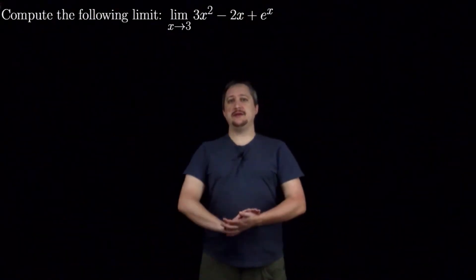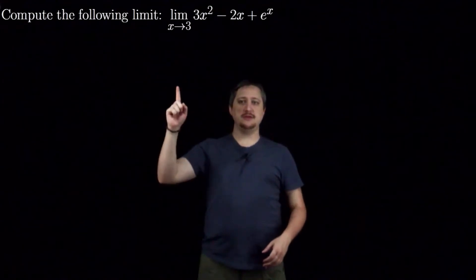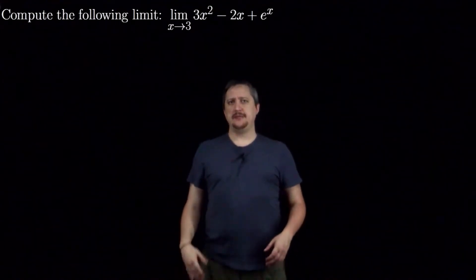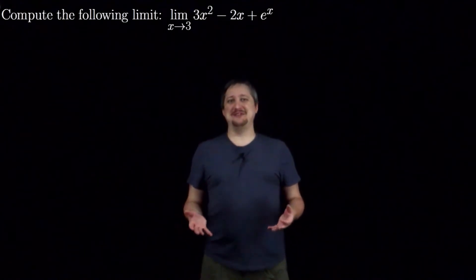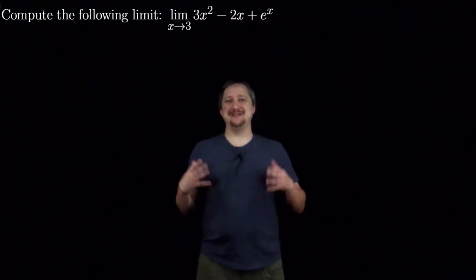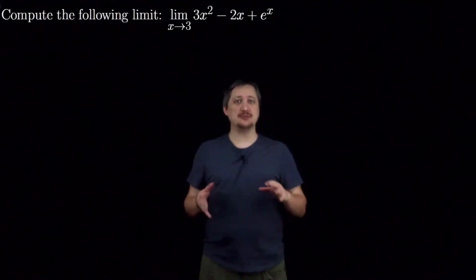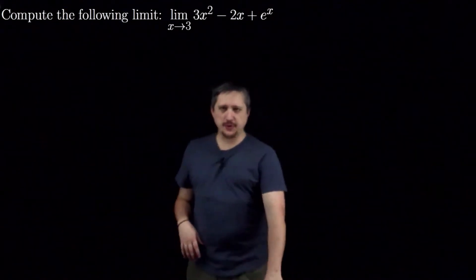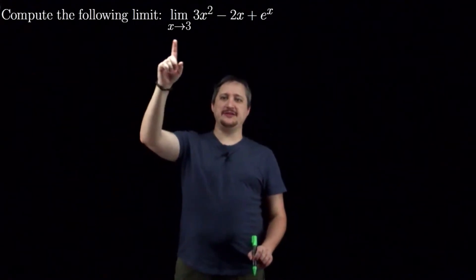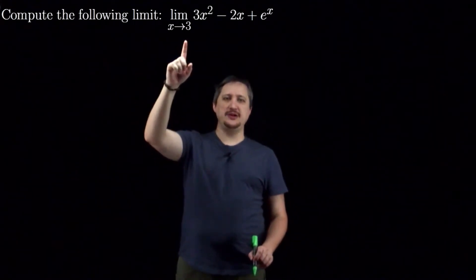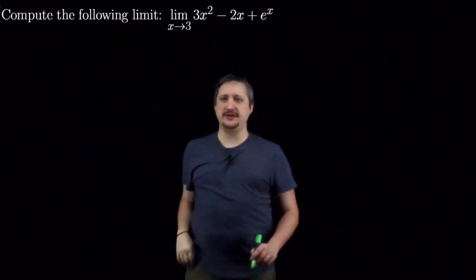Hello. In this video we're going to be doing a limit. We're going to go through in some agonizing level of detail to really show all of our algebra limit rules in practice. We want to take this limit as x goes to 3 of 3 times x squared minus 2x plus e to the x.